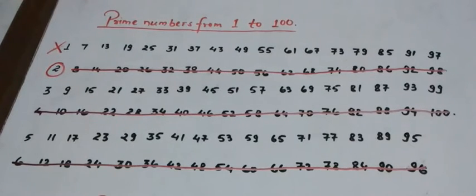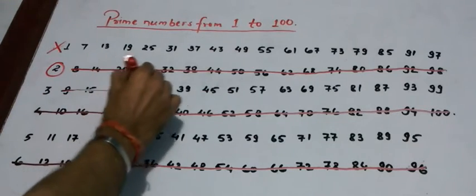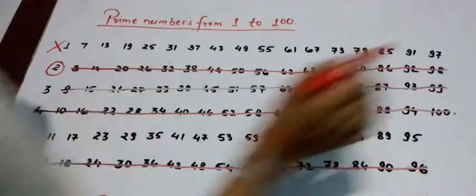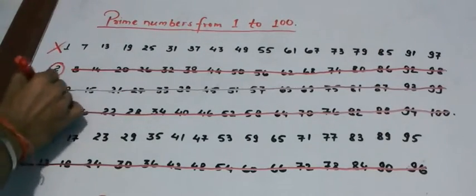Then in the second step, we cancel out all the multiples of 3 except 3. And we encircle the number 3.